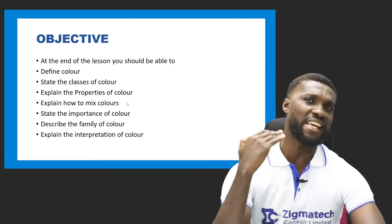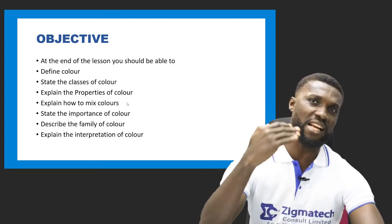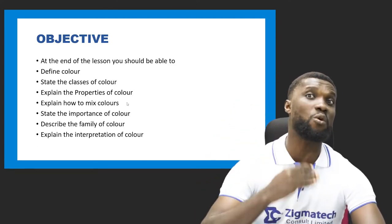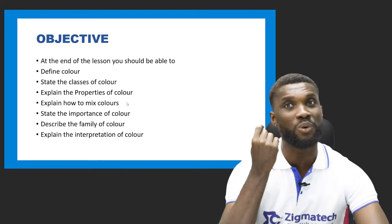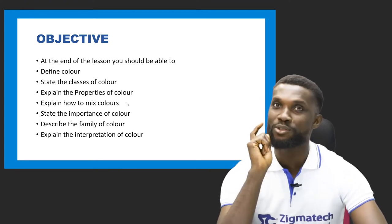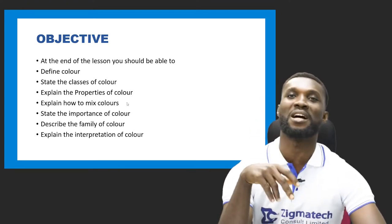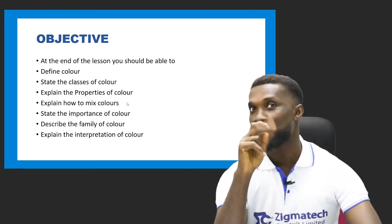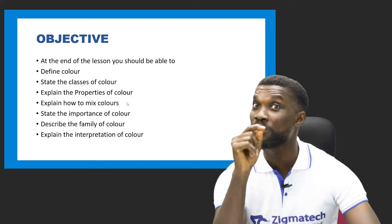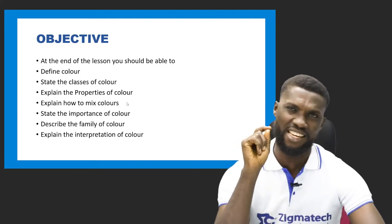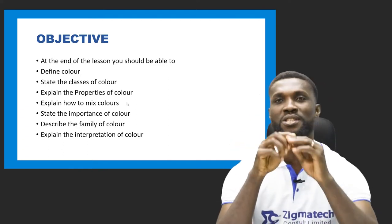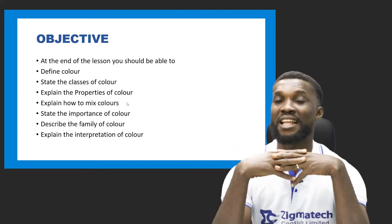At the end of this class, there are a lot of things I want you to know. Number one: I want you to know the definition of the word color — what exactly color is and its meaning. Number two: you'll be able to state the classes of color. Number three: you will learn to explain the properties of color. Inside each of these, there are other pieces of information you will get.